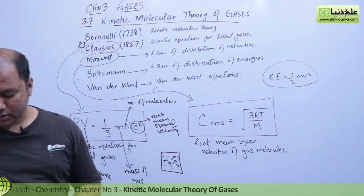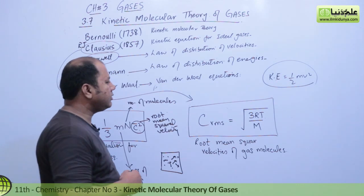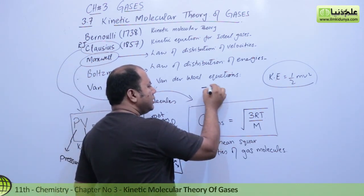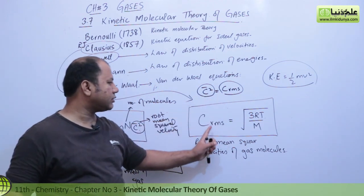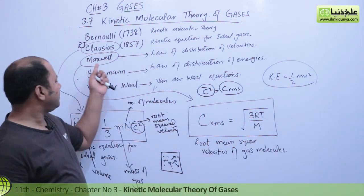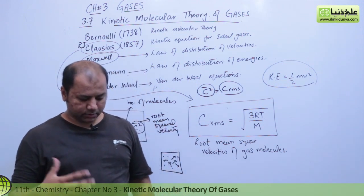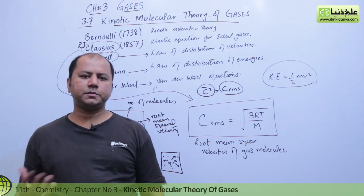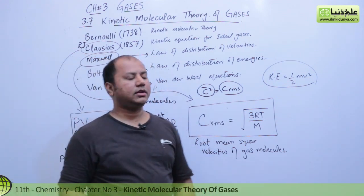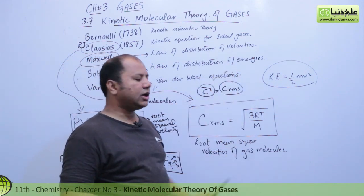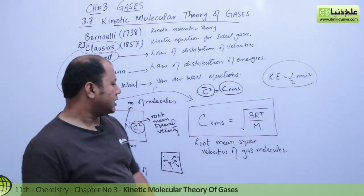C is basically the root mean square velocity. Maxwell states that velocities are not the same for all molecules — just like cars on a road all have different speeds, different gas molecules have different speeds. This is the distribution of velocities. That is why we derive this equation, which you will study in more detail in higher classes.